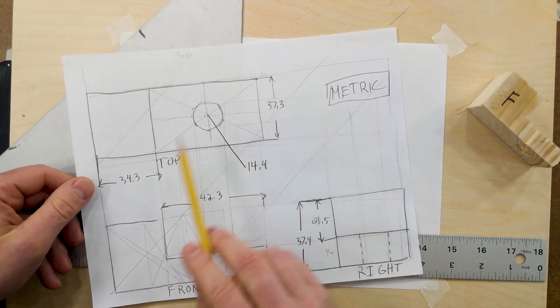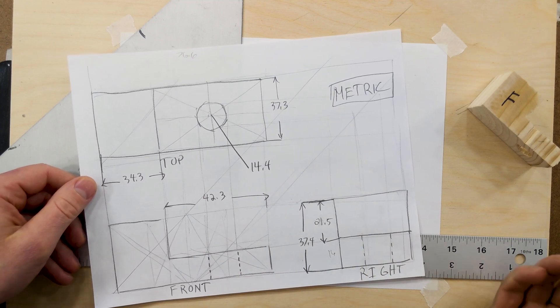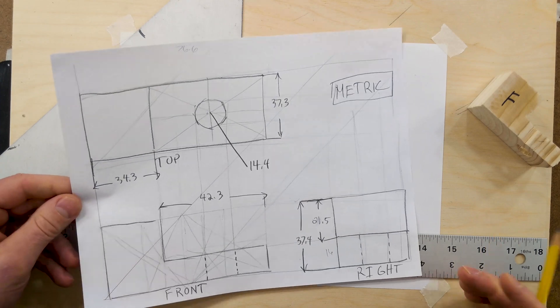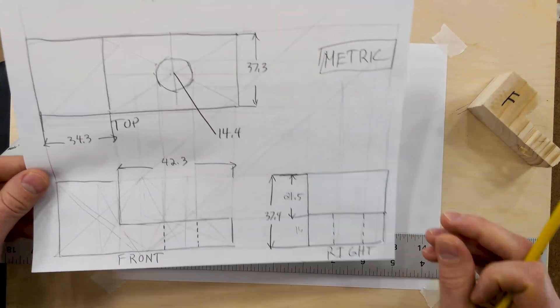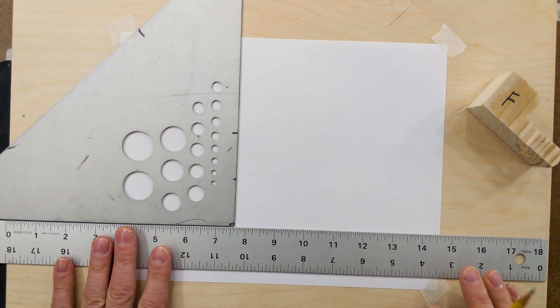We have our sketch here that we've done by hand, and this is great for communication, but what if we want to use drafting tools to make a more precise and detailed drawing? We can use these measurements and make a one-to-one scale drawing with our T-square and our 45 triangle.